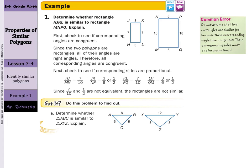In our example one, determine whether rectangle HJKL is similar to rectangle MNPQ and explain. Our first step to compare similar polygons is to see if the corresponding angles are congruent. These two polygons are rectangles, so all of their angles are right angles, so all the corresponding angles are congruent. A common error: do not assume that two rectangles are similar just because the corresponding angles are congruent. Their corresponding sides must also be proportional.